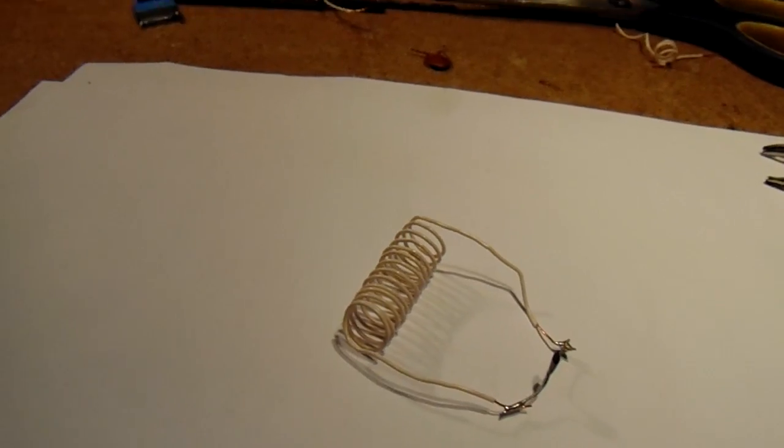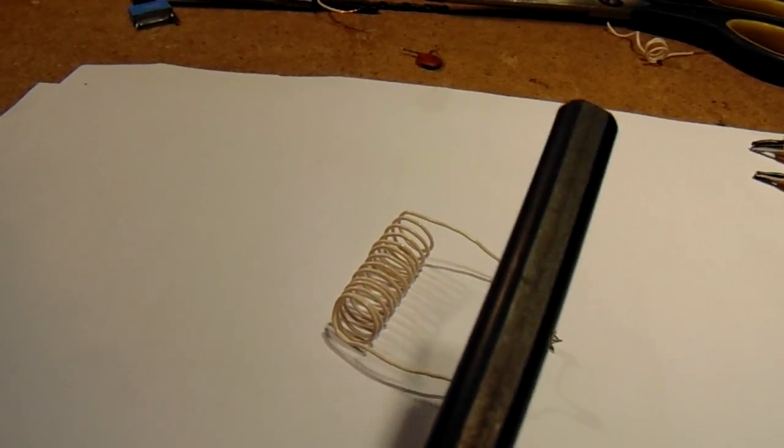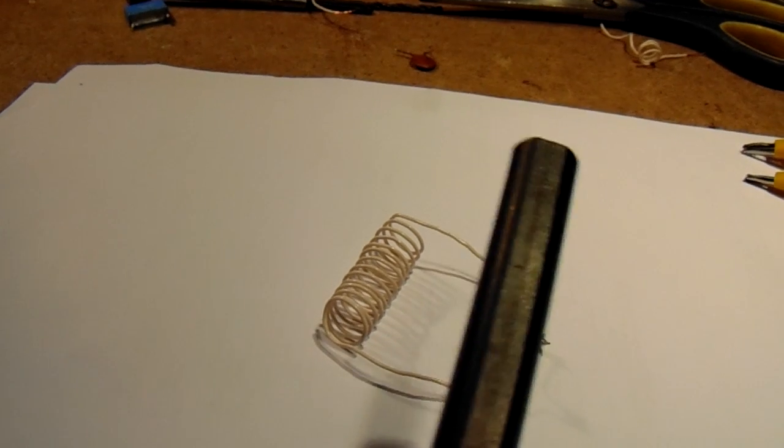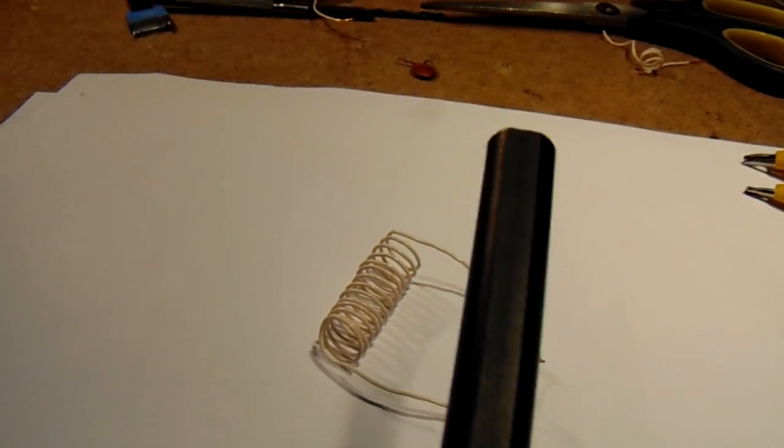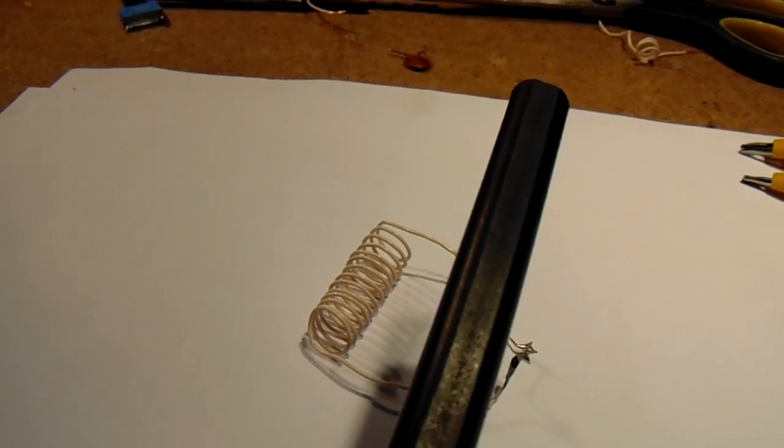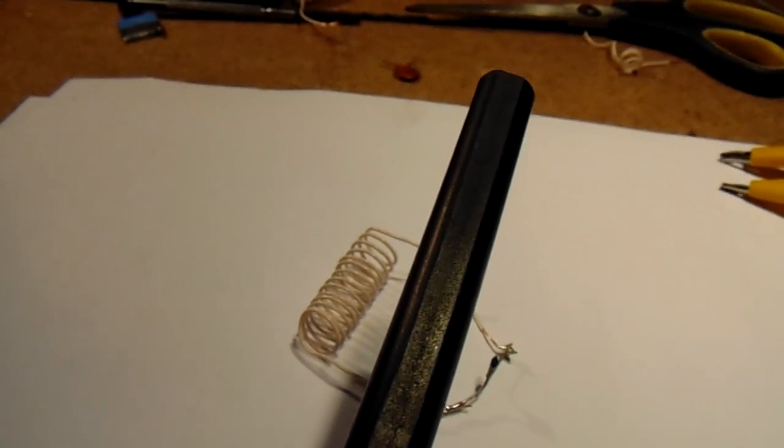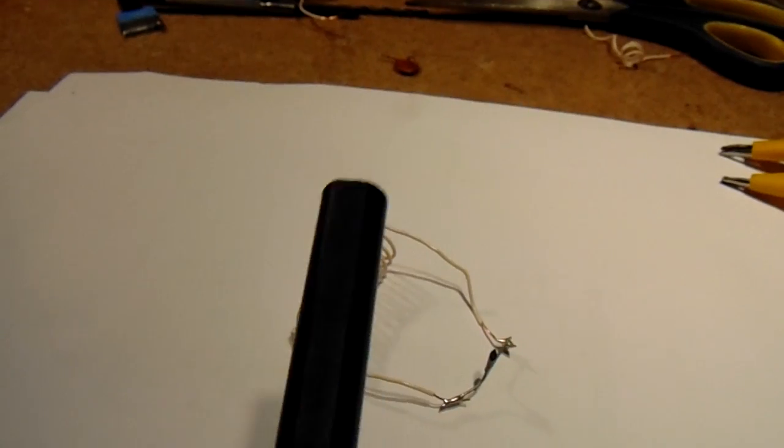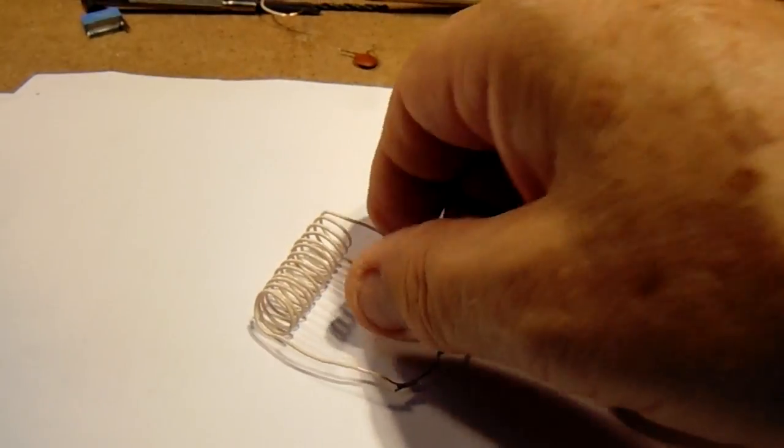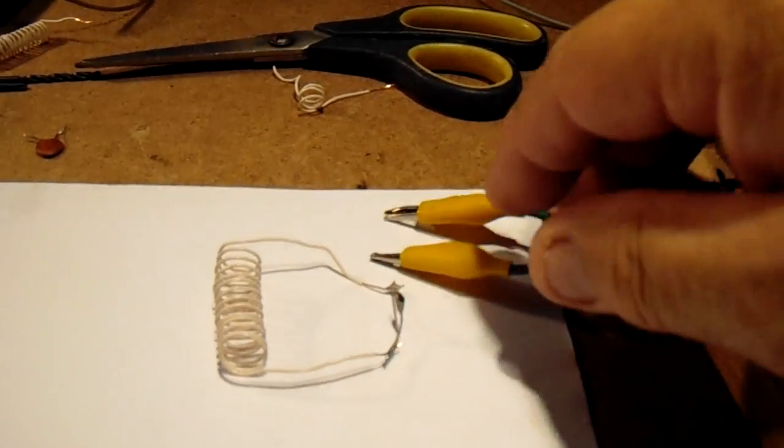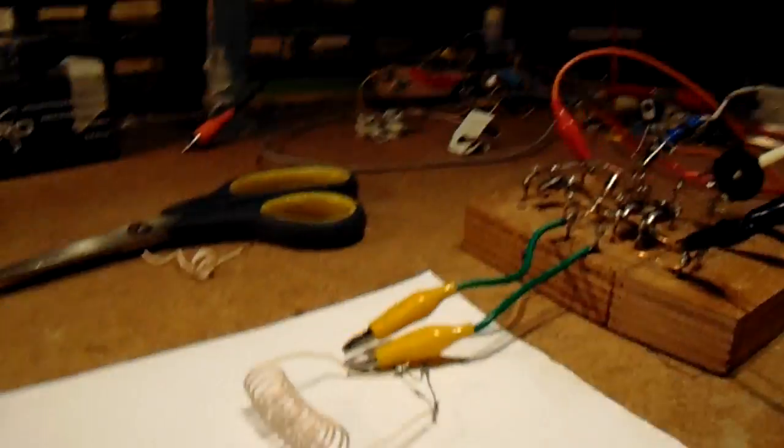But when we stick here into that coil a ferrite rod, the inductance goes up very high and it oscillates. So I want to do that now. First I'm going to connect this coil to the oscillator.